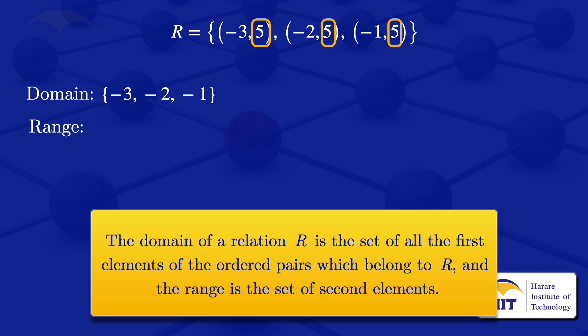So in summary, the domain of r is {-3, -2, -1} and the range is {5}. Thank you.